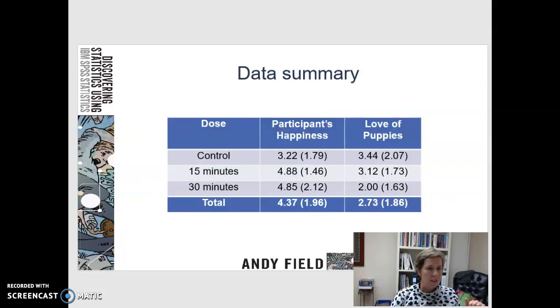So he gives a data summary here. This table is on Table 13.2 on page 426, and it's giving you the average participant's happiness for the control group, the 15-minute group, and the 30-minute group. And then it's also giving you their love for puppies for the control, the 15 minutes, and the 30 minutes.